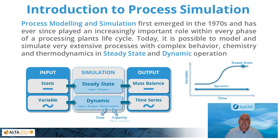Process modeling and simulation first emerged in the 1970s and has ever since played an increasingly important role within every phase of a process science lifecycle. Today, it is possible to model and simulate very extensive processes with complex behavior, chemistry, and thermodynamics in steady state and dynamic operation. This is a simplified representation of a simulation system, highlighting the key differences between simulation of steady state and dynamic capabilities.